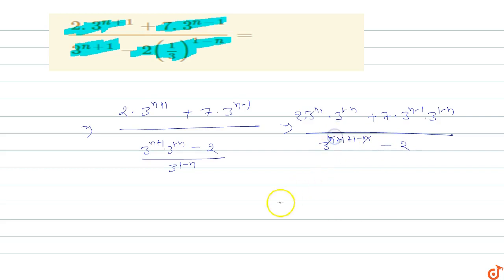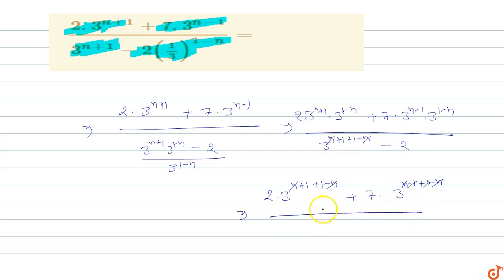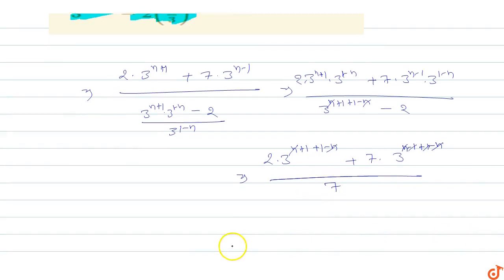The n terms cancel out. For the first term, the exponent is n plus 1 plus 1 minus n, so n cancels out. For the second term, 3 power n minus 1 into 3 power 1 minus n gives exponent n minus 1 plus 1 minus n, so n cancels out leaving 0. The denominator becomes 3 power 2 which is 9, and 9 minus 2 is 7.